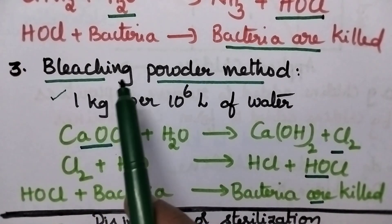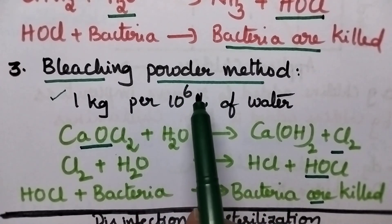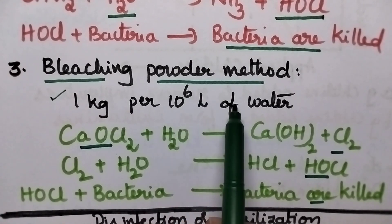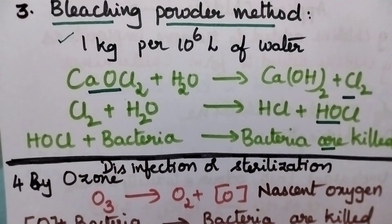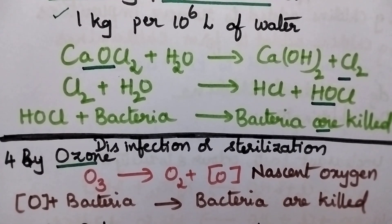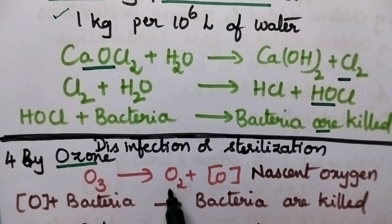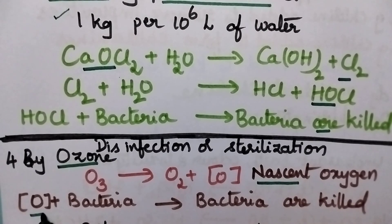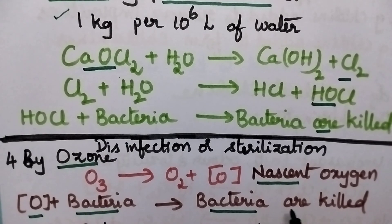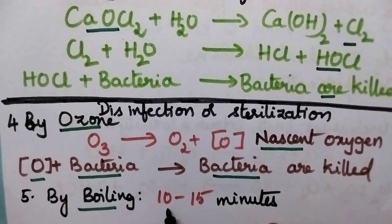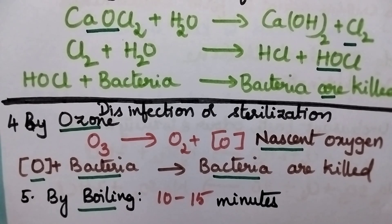In general, if excess bleaching powder is added to water, it gives an undesirable, disagreeable smell. Specifically, 1 kg of bleaching powder can be added to 10⁶ liters of water. Moving to other methods, disinfection or sterilization can also be done by the addition of ozone. Ozone is unstable and dissociates into water and nascent oxygen, which is the actual disinfectant. This nascent oxygen reacts with bacteria and kills them. Alternatively, disinfection can be done simply by boiling — whenever water is boiled for about 10 to 15 minutes, the existing microorganisms will be killed.